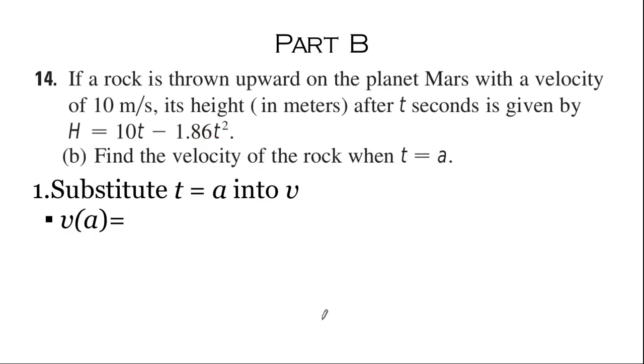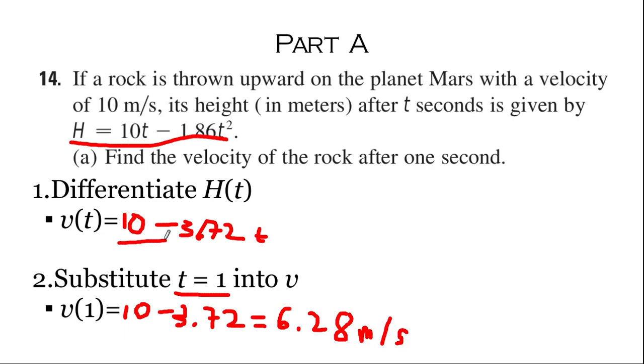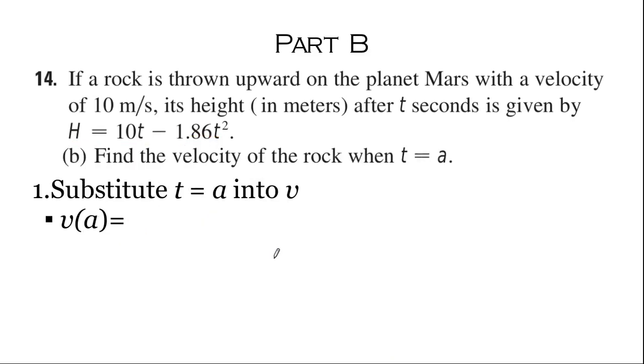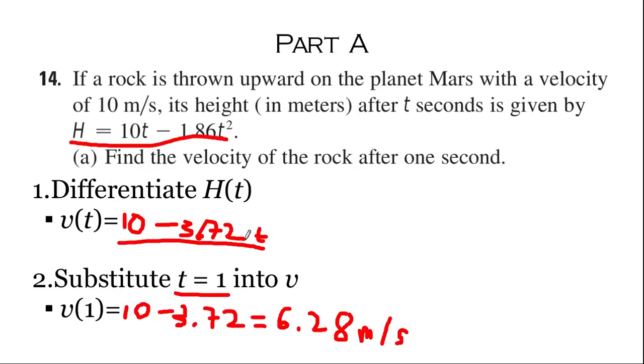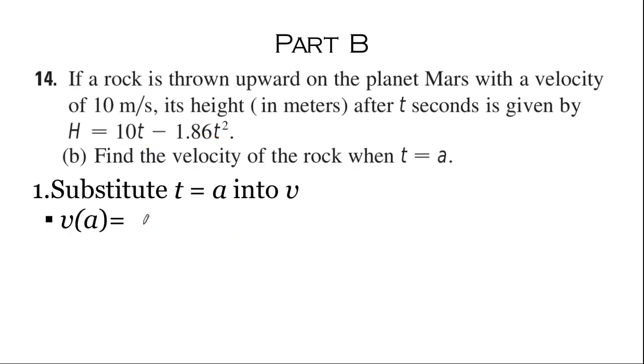Alright, let's look at part b now. We have this function here, v of t, and we can just substitute a. This step is not particularly difficult, so it's just 10 minus 3.72 times a.